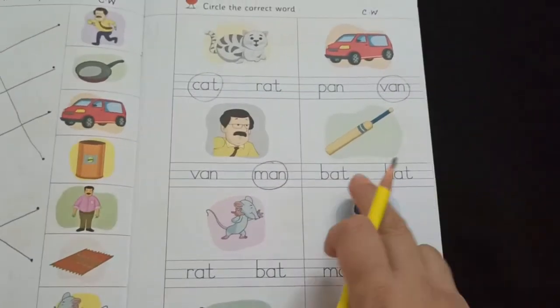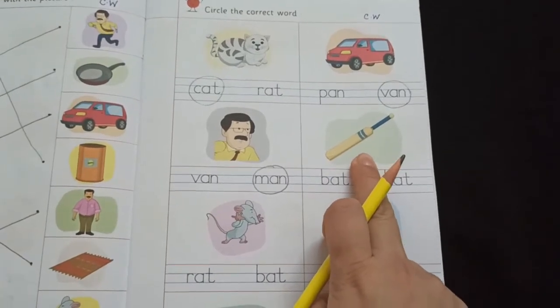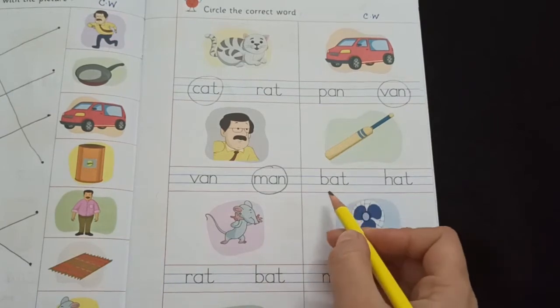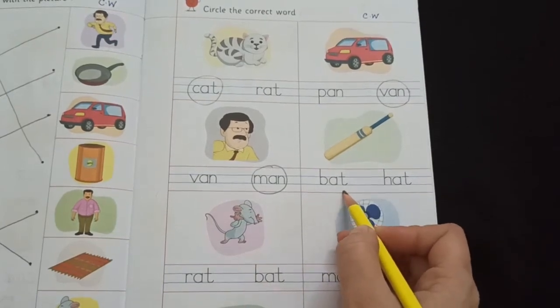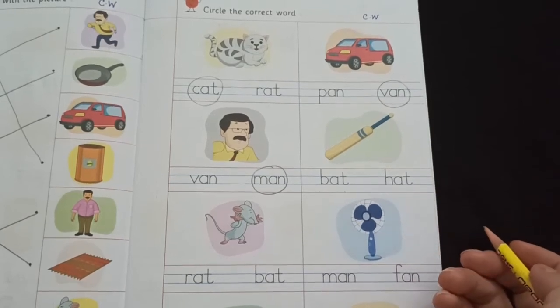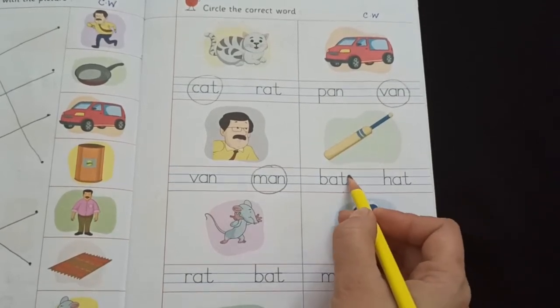Now the next picture. What is this? This is a picture of a bat. B-A-T, bat. H-A-T, hat. Which one is correct? Yes.